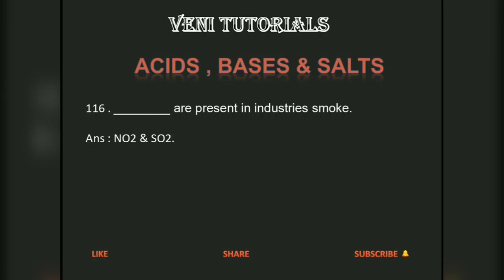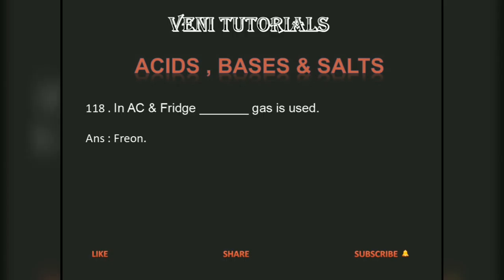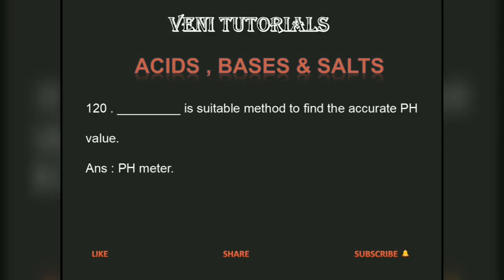In anaesthesia, N2O is used. In AC and freezers, chlorofluorocarbon (CFC) gas is used. A pH meter is the most suitable method to find the accurate pH value.